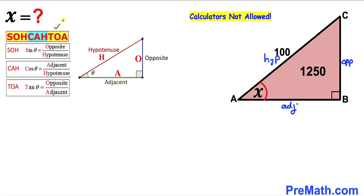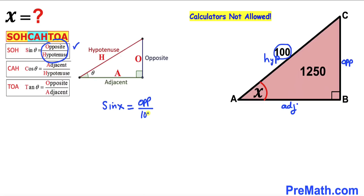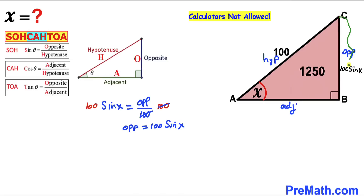Now let's recall SOH-CAH-TOA. We are interested in sine and cosine. In our case, sine of angle x equals opposite divided by hypotenuse. The hypotenuse value is 100, so multiplying both sides by 100, the opposite side turns out to be 100 times sine of x. So side BC is represented by 100 times sine of x.